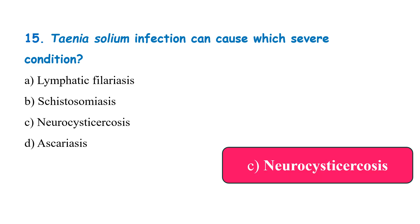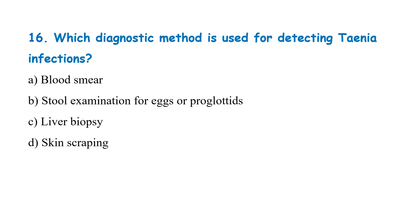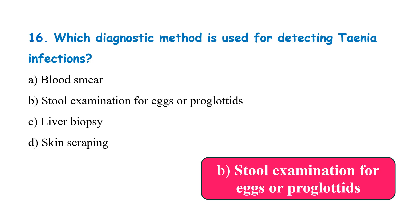The correct answer is neurocysticercosis. Which diagnostic method is used for detecting Taenia infections? Blood smear, stool examination for eggs or proglottids, liver biopsy, or skin scraping? The correct answer is stool examination for eggs or proglottids.